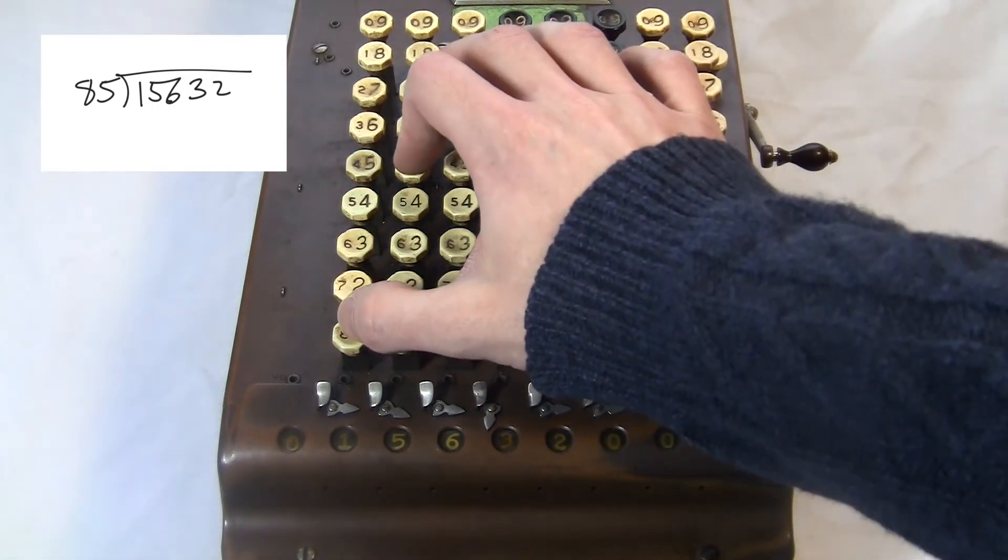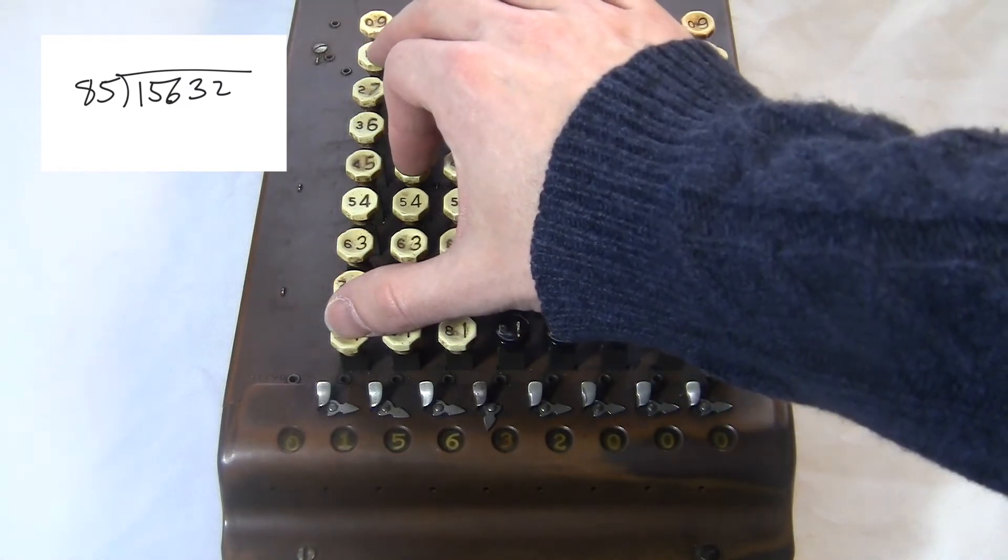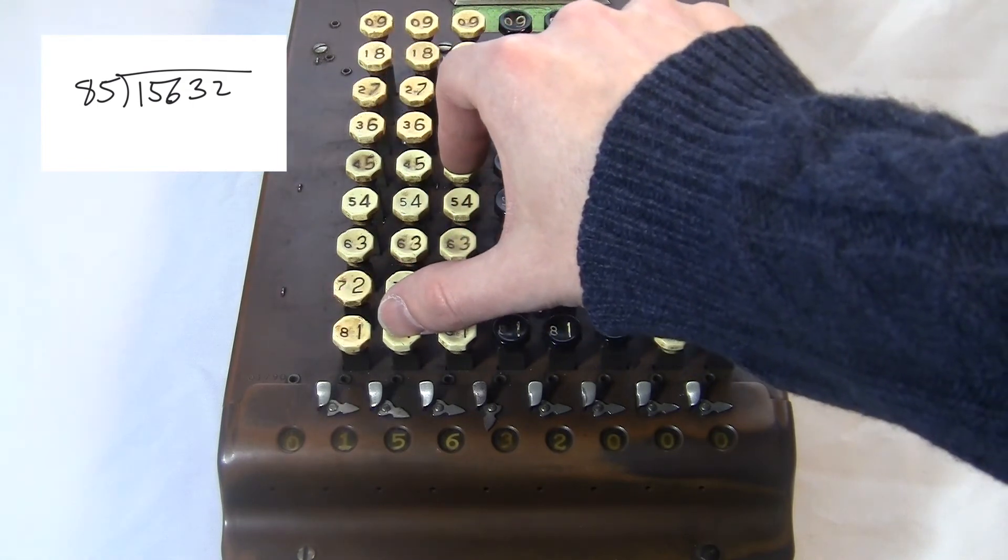I'm going to be subtracting 85, so I put my fingers on the co-digits for 84 as far to the left as possible. Now just like in long division, you look at groups of digits down here, and your goal is to subtract 85 over and over until you can't subtract any more. Now the first two digits down here is 15, which is smaller than 85, so I can't subtract any, and I move over.